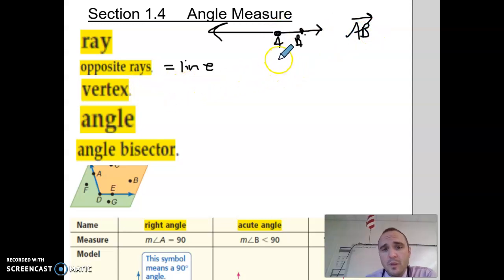Vertex. If you look down on this picture, the vertex, you have an A, a B, and an E on this line. Which letter is the vertex? Well, the vertex is D. It's in the middle of the angle.